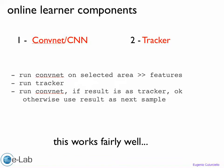The online learner component has basically two parts: a ConvNet — the convolutional neural network — and a tracker. What you do is run the convolutional neural network, and when I click on a prototype, the ConvNet runs on the whole image and saves features from the selected area. Then in subsequent frames it runs a tracker in parallel alongside the ConvNet. If the ConvNet results are similar to the tracker results, that's good.